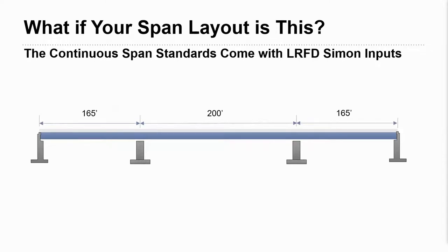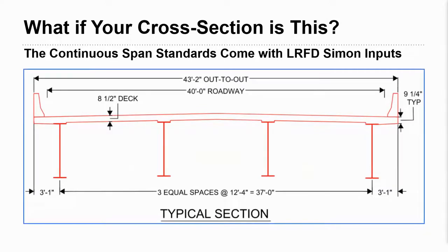We're going to jump into our three-span continuous steel girder example. We're going to suppose that we've already done our preliminary type, size, and location study and our owner has bought off on this arrangement. This is a river crossing three-span continuous where we have a 200 foot center span, 165 foot end spans. This is our bridge deck typical section. We have about 43 foot 2 inch out to out on the deck. We have a 40 foot roadway with 3 foot 1 inch overhangs with 12 foot 4 inch girder spacing, four girders spaced on center there. We have an 8.5 inch bridge deck with 9.25 inches at the edge of deck.